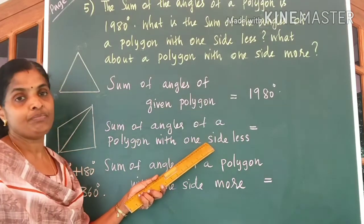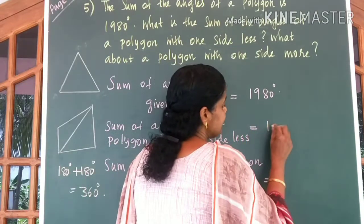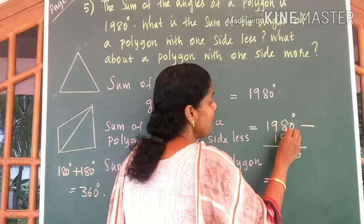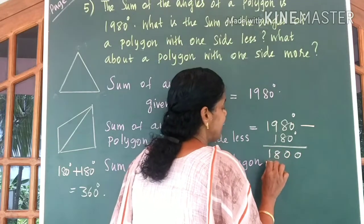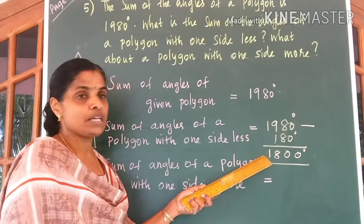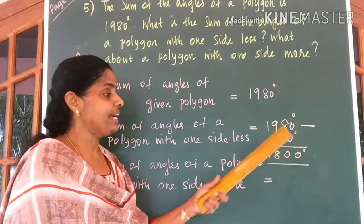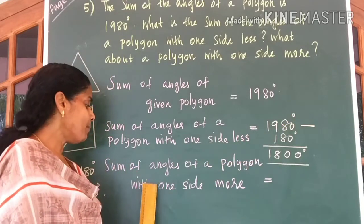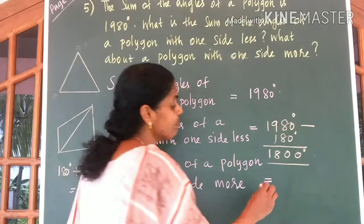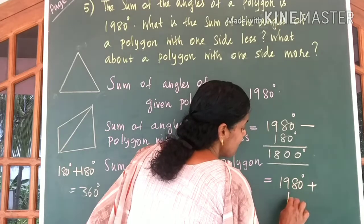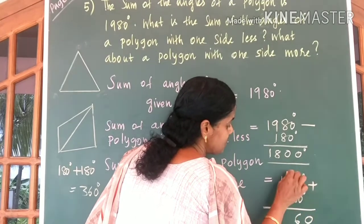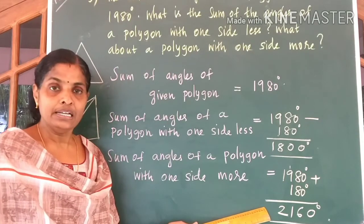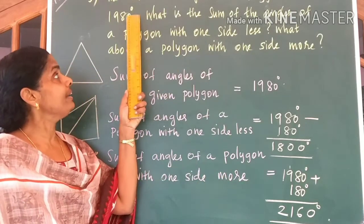So, the answer for our question — if one side is less, we can write it as 1980 degrees minus 180 degrees, which equals 1800 degrees. When one side is less, the sum of angles of that polygon is 1800 degrees. Now, what happens when one side is more? 180 degrees will be added to it. So, the sum of angles of a polygon with one side more would be 1980 degrees plus 180 degrees, which equals 2160 degrees.